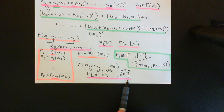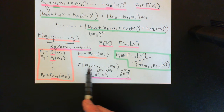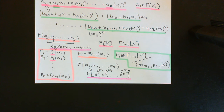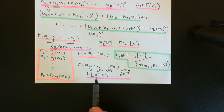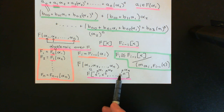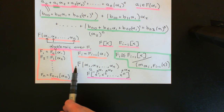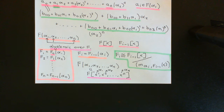Everything in here evaluated at these elements actually has to be in the field generated by α₁, α₂, all the way up to αₙ over F. Indeed, all of these polynomials over F, evaluated at α₁, α₂, ..., αₙ, are just these elements being raised to certain powers, multiplied with each other, and then multiplied with elements of the field F. Because the field extension has to be closed under multiplication and addition, all of those elements must be in it — and this does seem intuitive as a direct extension of what we've already been discussing.